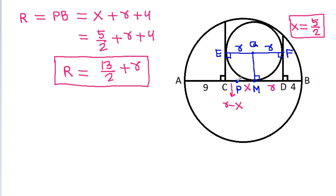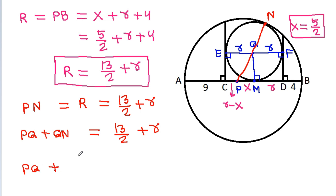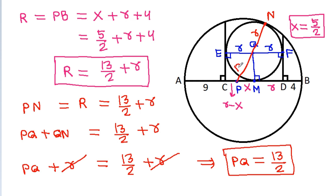And now, if we join PQ, suppose this point is N. Then PN will be equal to capital R, that is 13 by 2 plus small r. And PN is PQ plus QN, that is equal to 13 by 2 plus small r. QN will be small r. So R will get cancelled, and PQ is equal to 13 by 2.